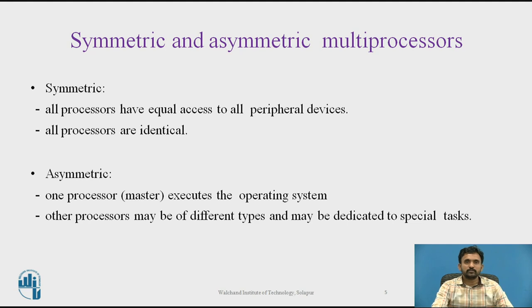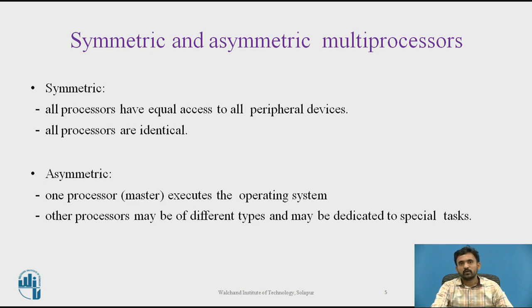When all the processors have equal access to all peripheral devices, the system is called a symmetric multiprocessor. When only one or a few processors can access all peripheral devices, the system is called an asymmetric multiprocessor. In an asymmetric system, one master processor executes the operating system, while other processors may be of different types dedicated to special tasks.